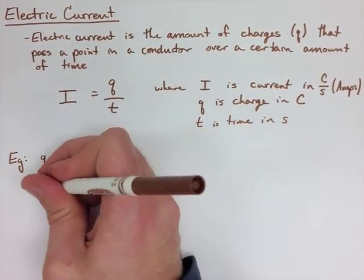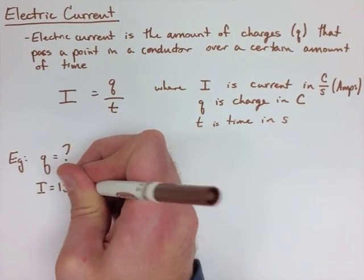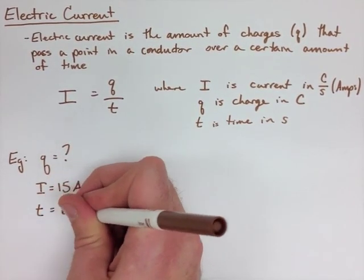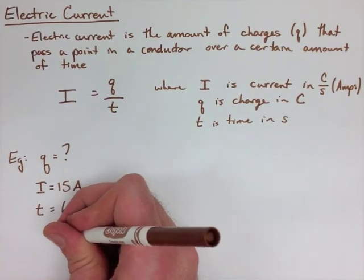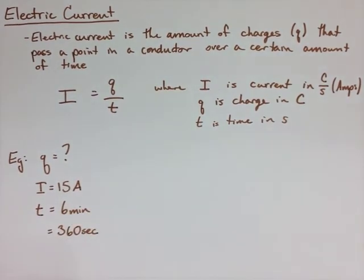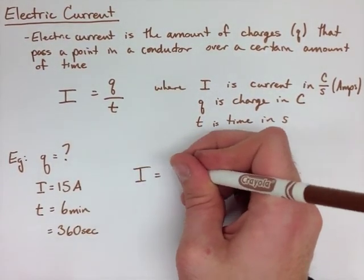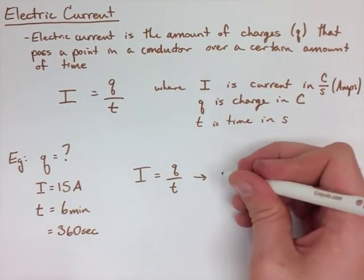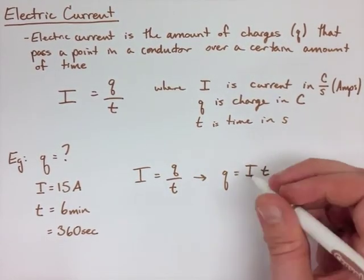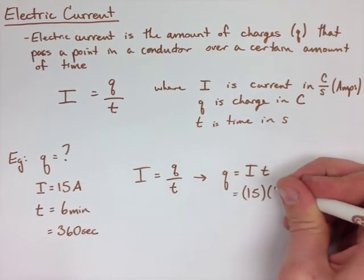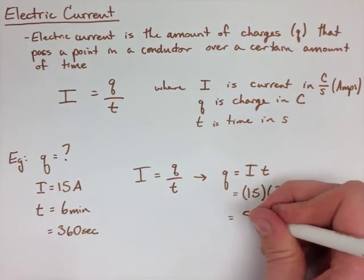So we have Q as our question mark, I as our 15 amps, and T is 6 minutes or 360 seconds. We rearrange our I equals Q over T to Q equals IT, multiply 15 times 360, and get 5400 Coulombs of charge.